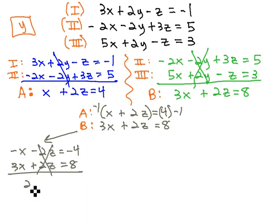When we combine them, we're left with 2x equals 4. Divide both sides by 2, and x is equal to 2.